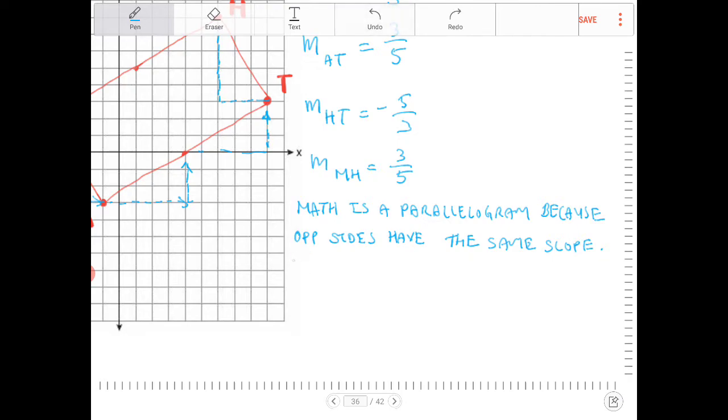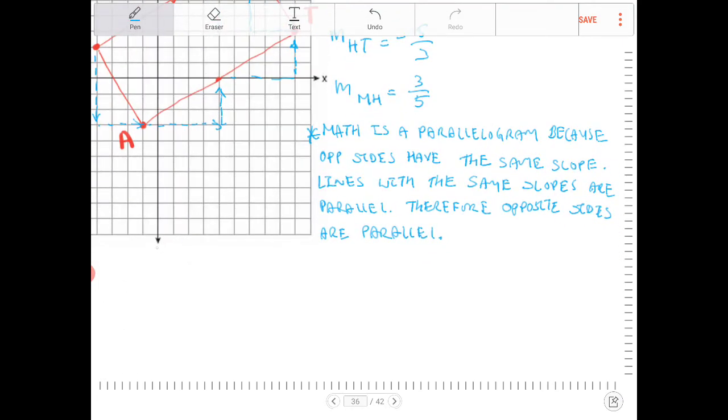Lines with the same slope are parallel. Therefore, opposite sides are parallel. So this is the reason for why it's a parallelogram. Let's write out the reason for why it's a rectangle now.